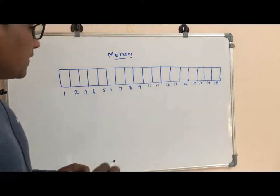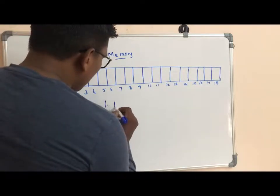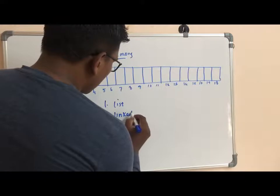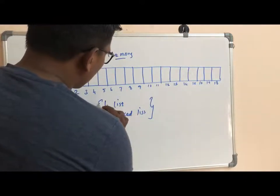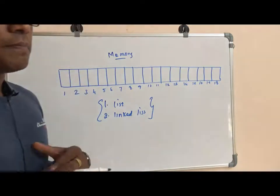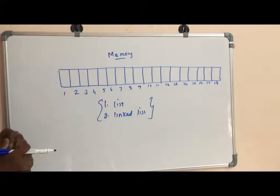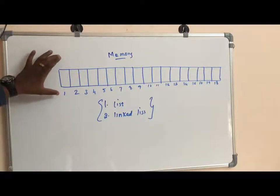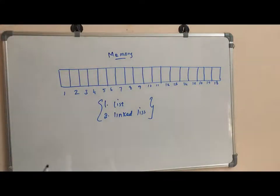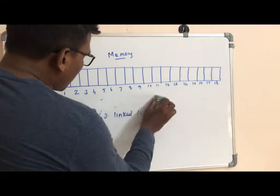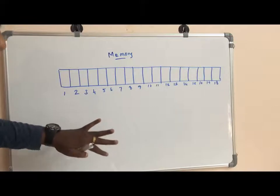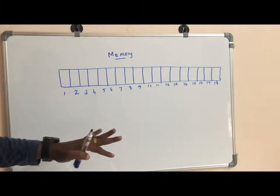In this video, we will talk about data structure and linked list. We will talk about two topics. If you have a memory manager, you can locate the memory. That's why we have a list and linked list. For example, if we execute a program, we can locate the memory manager. If you have a list and linked list, it will be easy to understand.